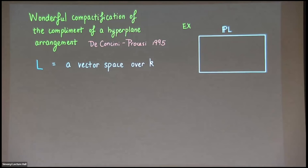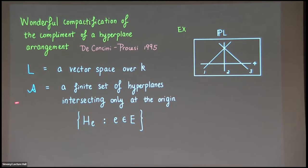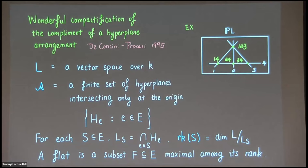The wonderful compactification is a compactification of the complement of a hyperplane arrangement in a vector space. You take a vector space over K — I draw the projective version. Here is ℙ², and I take a finite set of hyperplanes intersecting only at the origin, indexed by a finite set E. Here E is the set {1, 2, 3, 4} arranged as shown. For any subset S of E, we consider the linear subspace by intersecting all the hyperplanes indexed by S, and the rank of a set S is defined to be the dimension of the quotient space.